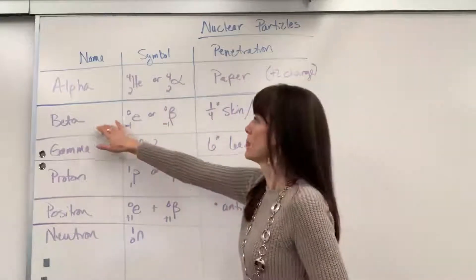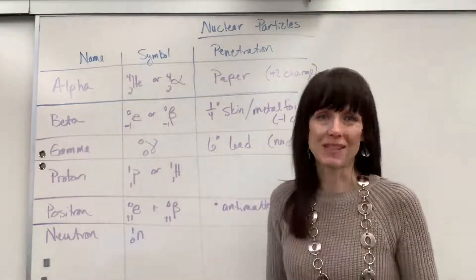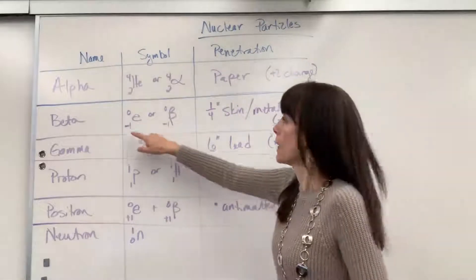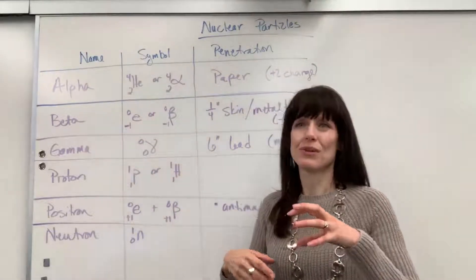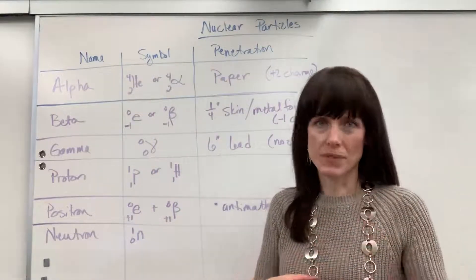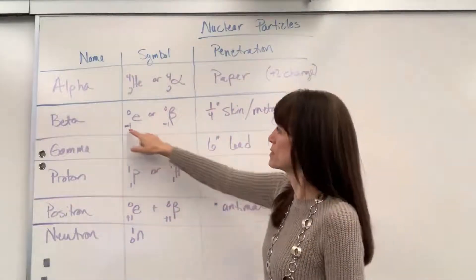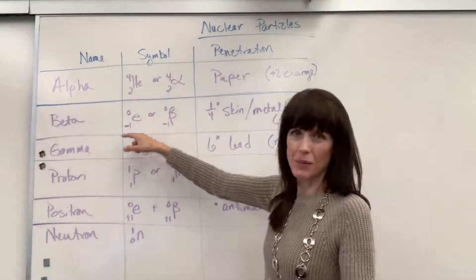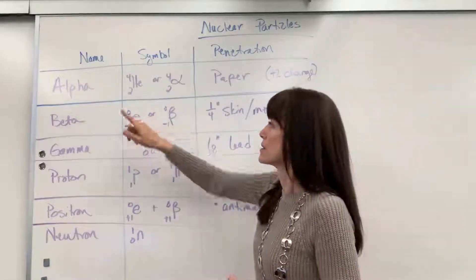Okay, beta. So beta particles, they're actually just a high-speed electron. So we can do E for electron, a minus one, because you know that electrons have the opposite charge of a proton. So we're going to put this down here in the atomic number as a minus one. And up here, zero, in essence, electrons have no mass.